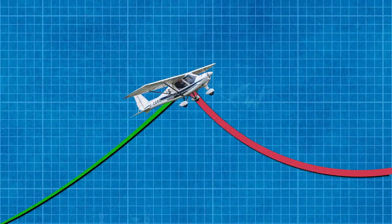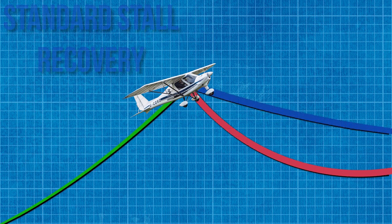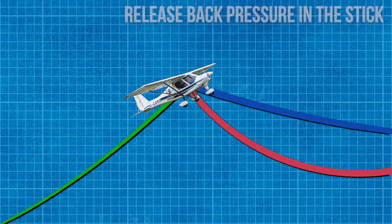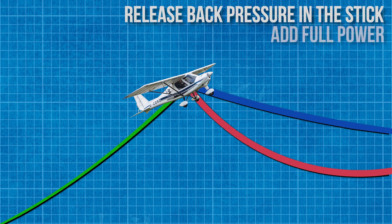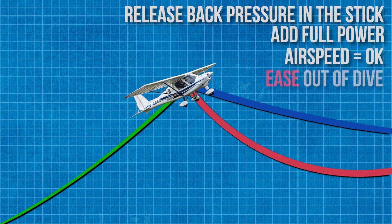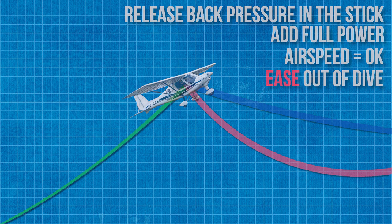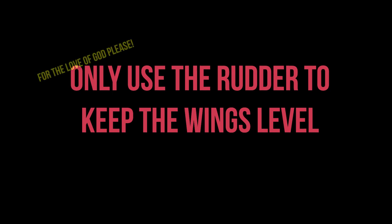The second stall recovery — the standard stall recovery — is where we release the back pressure on the stick and use full power to lose as little height as possible. Make sure to maintain balance all throughout the stall recovery. As we approach the stall, make sure to only use your rudder to keep the wings level and to keep the aircraft in balance.